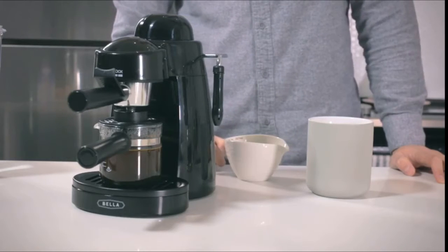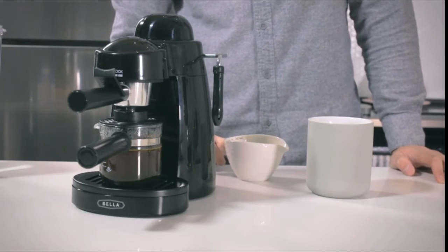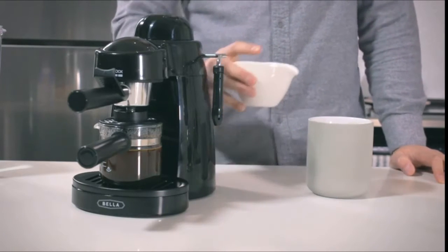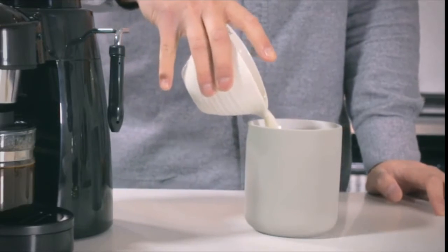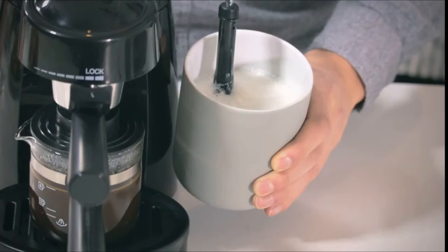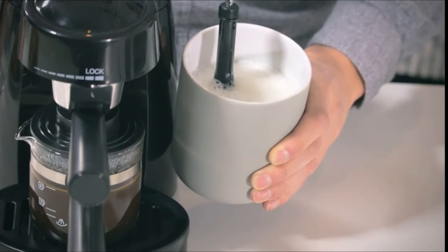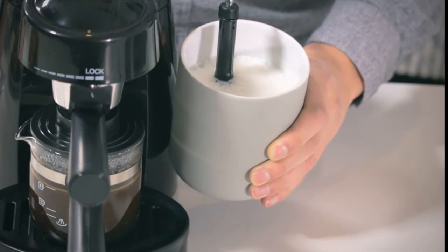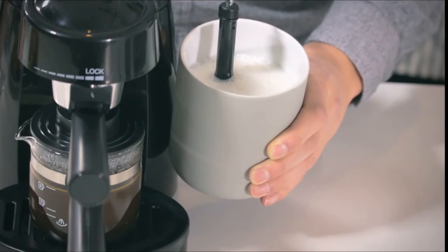For a fancier coffee experience, you can easily turn your espresso into a cappuccino. Simply fill your pitcher with cold milk, place directly under the steam wand and turn to steam. The steam wand quickly warms and frosts milk so you can easily turn plain espresso into a latte or cappuccino.